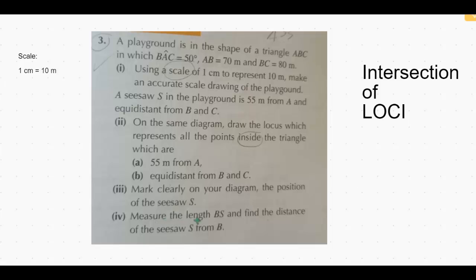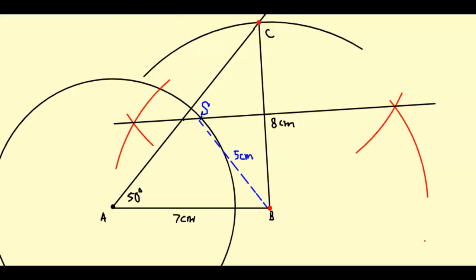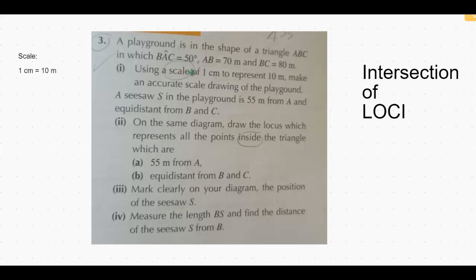In the last part, we have to measure the length BS and find the distance of the seesaw from B. The length BS is 5 centimeters and according to the scale that is 50 meters.